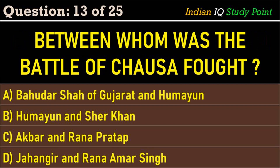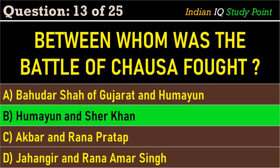Coming to the next question: between whom was the battle of Chausa fought? Option A. Bahadur and Humayun, B. Humayun and Sher Khan, C. Akbar and Rana Pratap, D. Jahangir and Rana Amar Singh. And the correct answer is Option B. Humayun and Sher Khan.